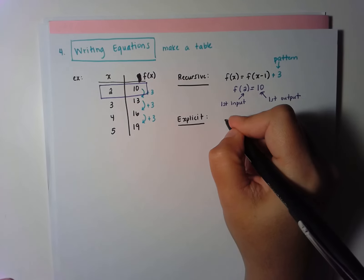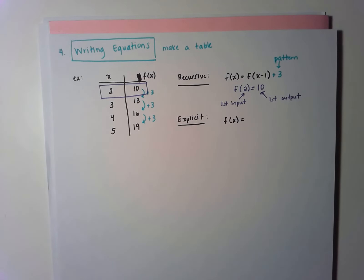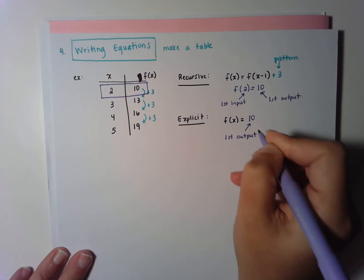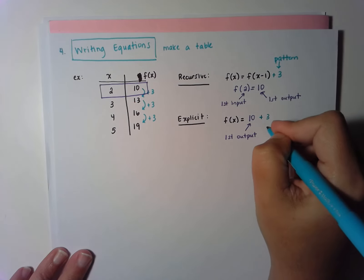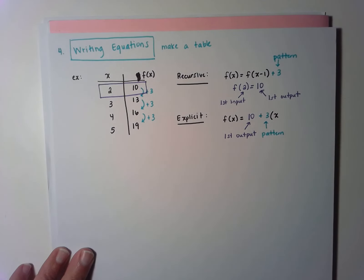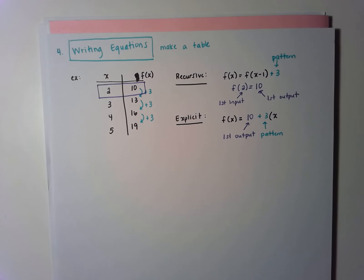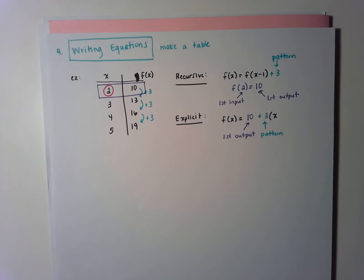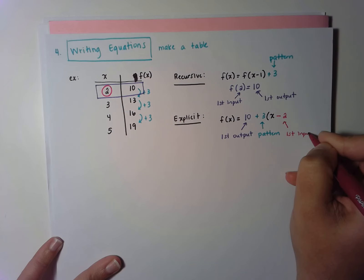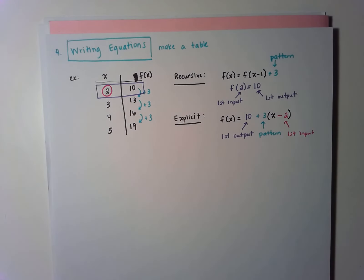For the explicit equation, it starts with f of x equals, then the starting output which is 10, then the pattern which is plus 3, then parentheses with x. Because this is arithmetic, I use a regular parentheses with x — if it were geometric I would use an exponent. Then I need to look at the starting input value. Since we always want our table to start at 0 as the input, and this table starts at 2, I write x minus 2 to adjust back to 0.